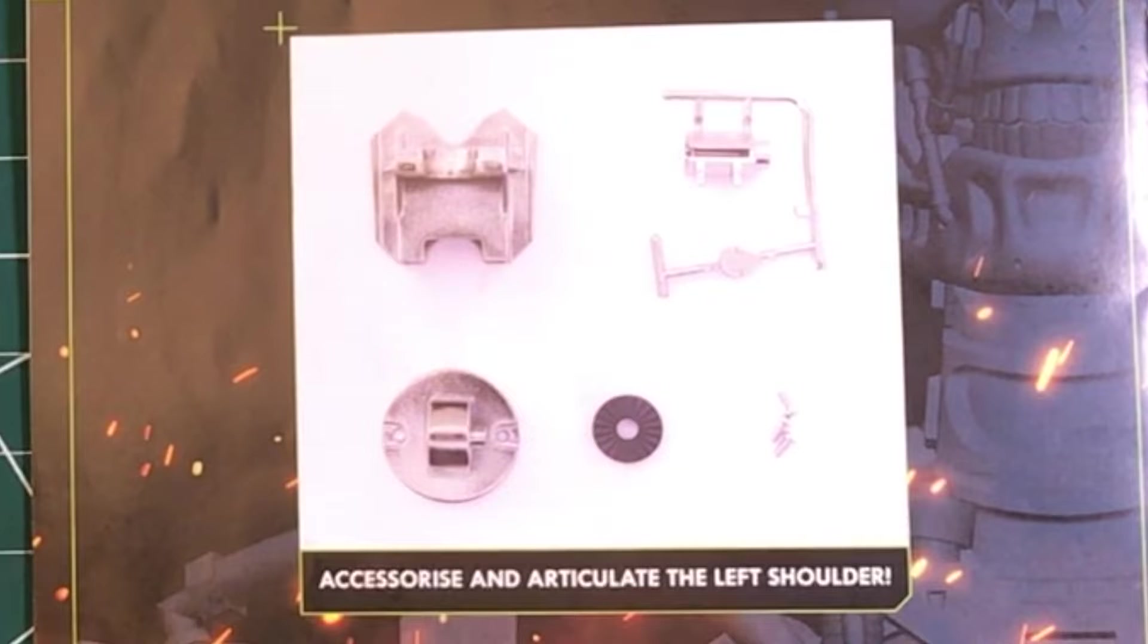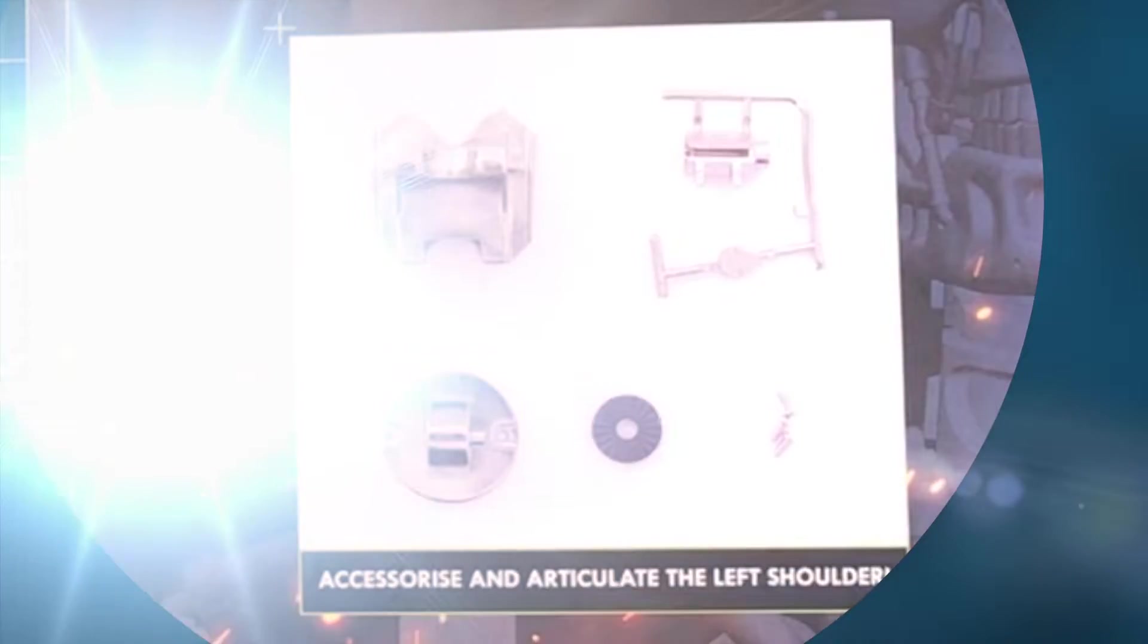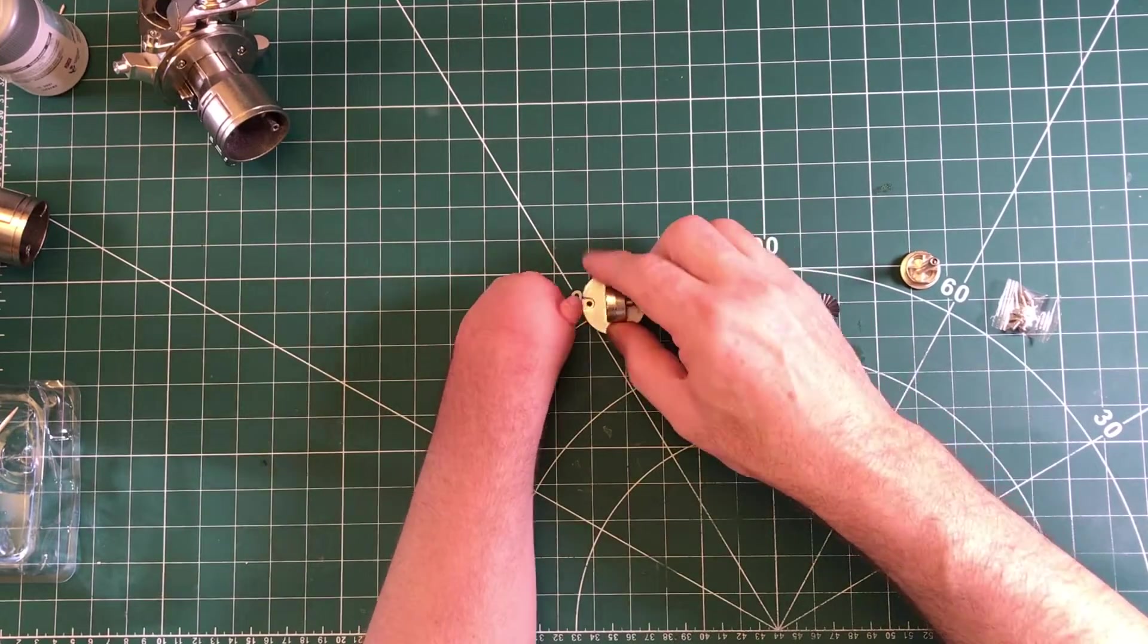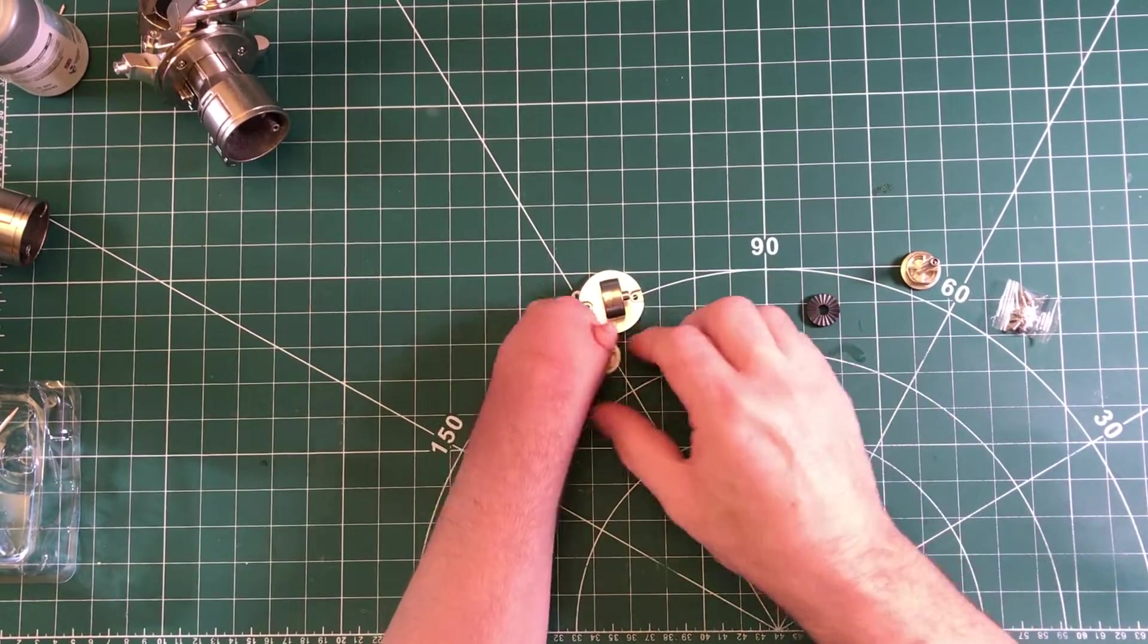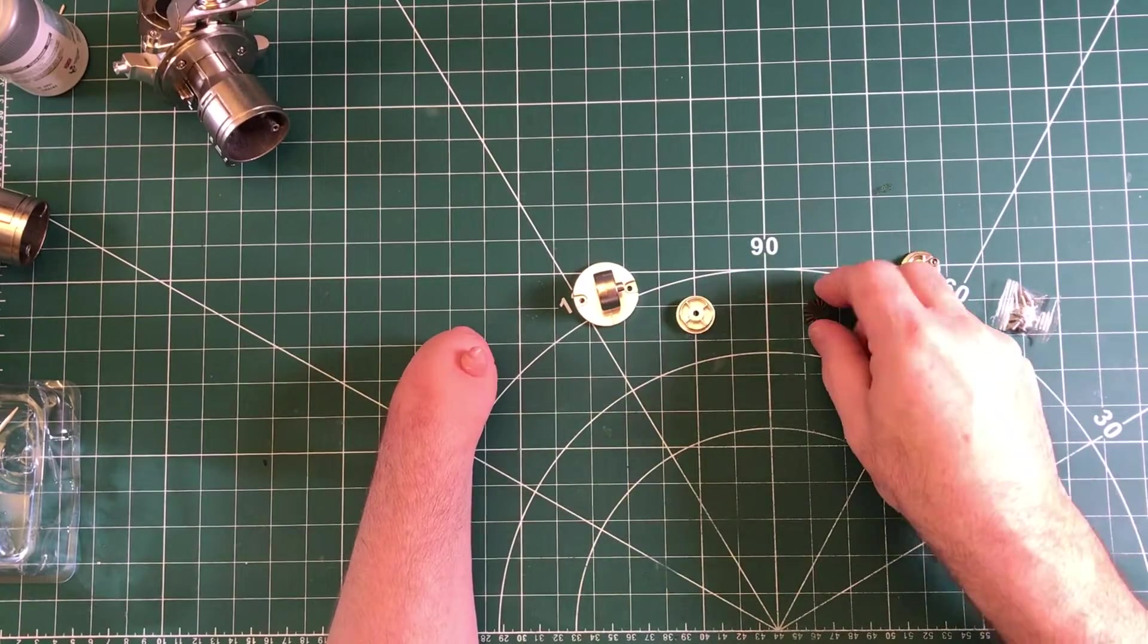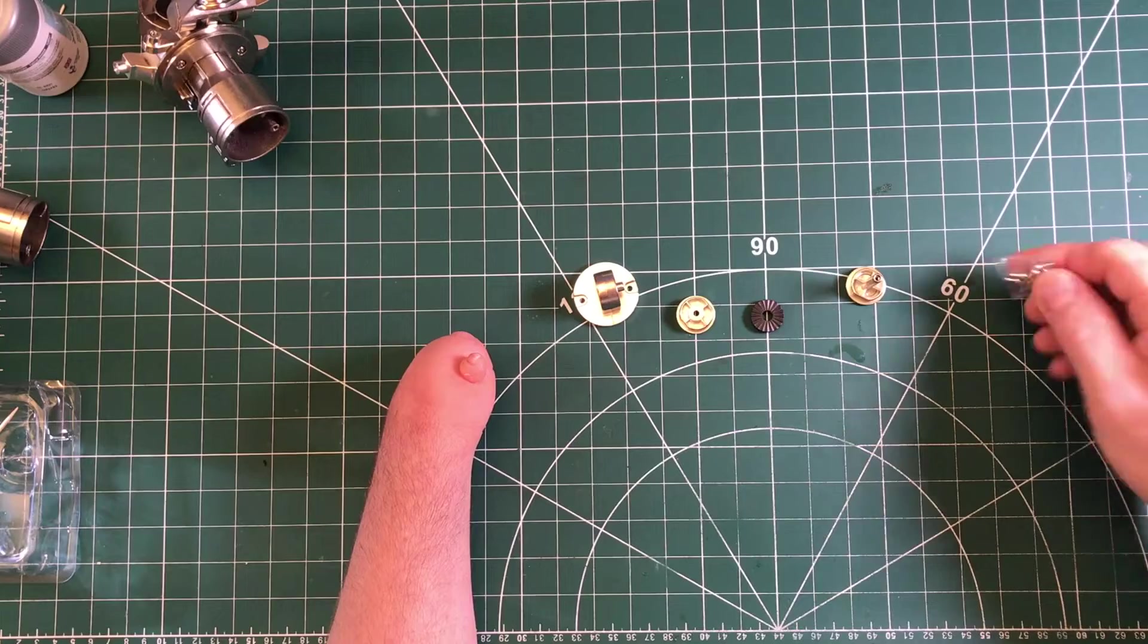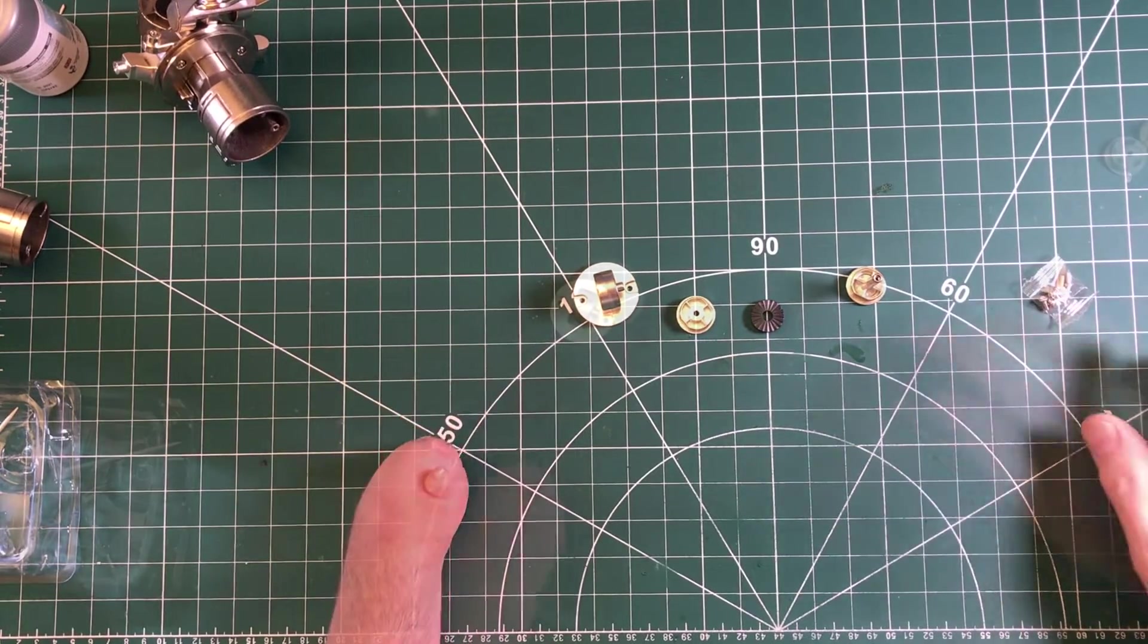So let's have a look and see what we've got in this issue. We've got this part which is metal, this part also metal by the looks of it, plastic, and that plastic part, and some screws. So let's crack on with the build.